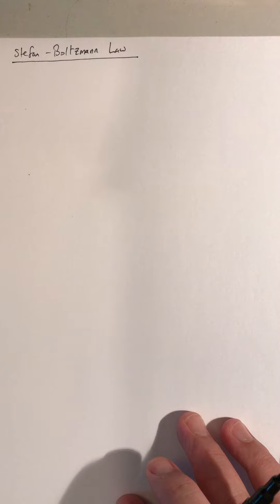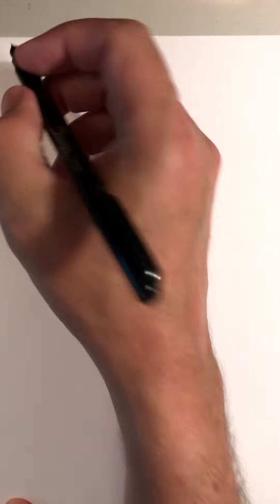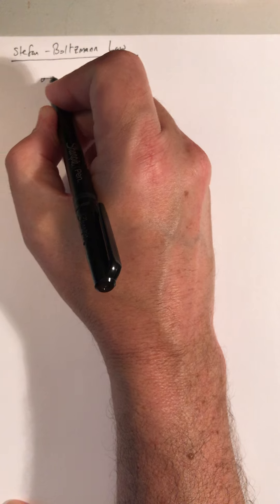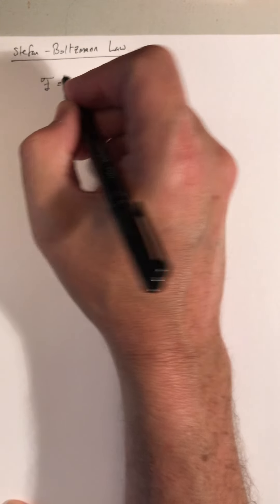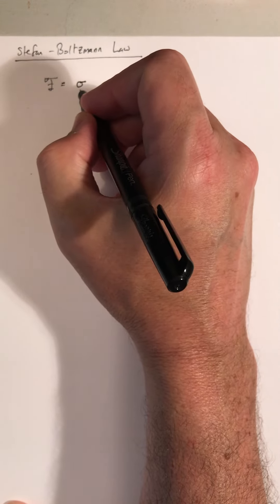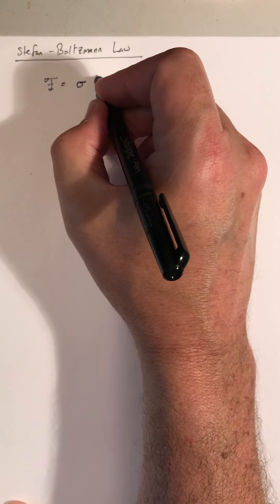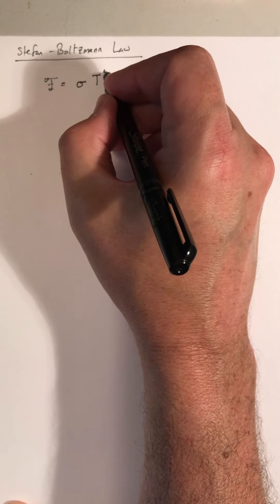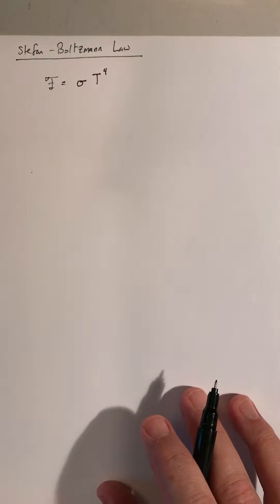And the Stefan-Boltzmann law relates what's called the flux to the temperature that a surface is at. So the relationship is the flux is a constant of nature, the Stefan-Boltzmann constant, lowercase sigma times temperature to the fourth power.